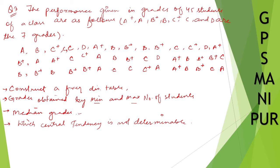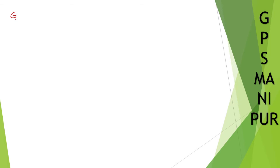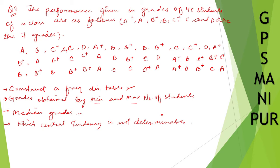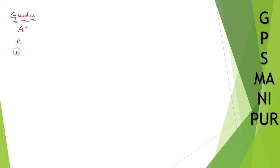First, we are going to construct a frequency distribution table. Let us write down the grades. The grades given are: A+, A, B+, B, C+, C, and D.